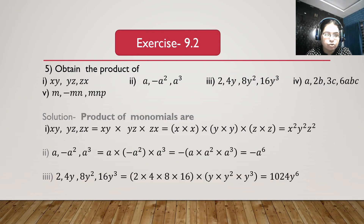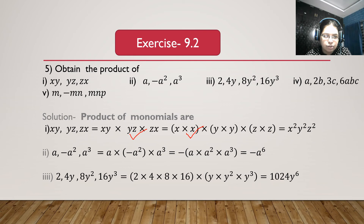Now question number 5: obtain the product. First bit: xy, yz and zx. xy multiplied with yz multiplied with zx gives x multiplied with x is x square, y multiplied with y is y square, and z multiplied with z is z square. So we get x square y square z square.